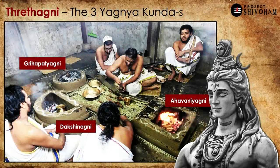Throughout the history of ancient Bharat, and by extension the entirety of Sanatana Dharma, Agni has an incredibly important role. During the ancient times in Bharat, there are always these three fires that have to be maintained in every home. These are called Tretagni, and there are three: Ahavaniya, Grahapathya, and Dakshinagni.